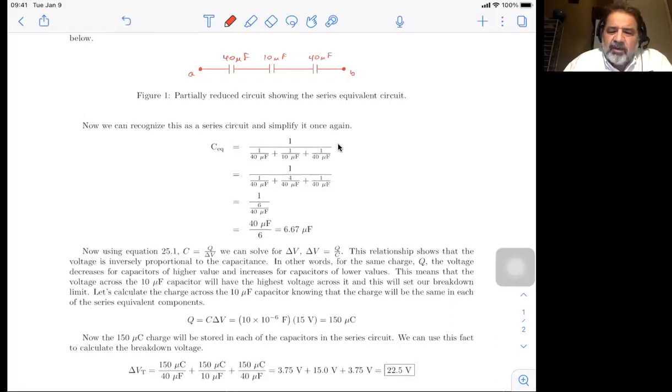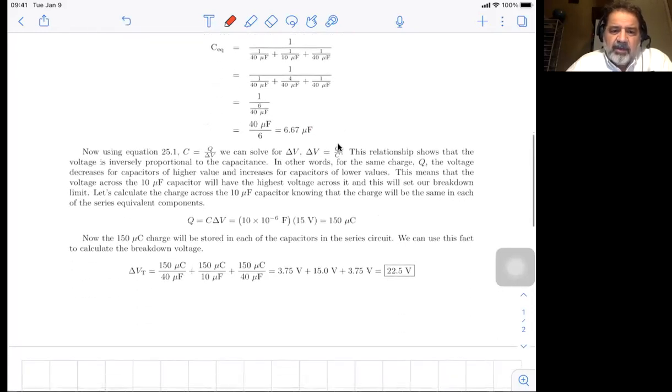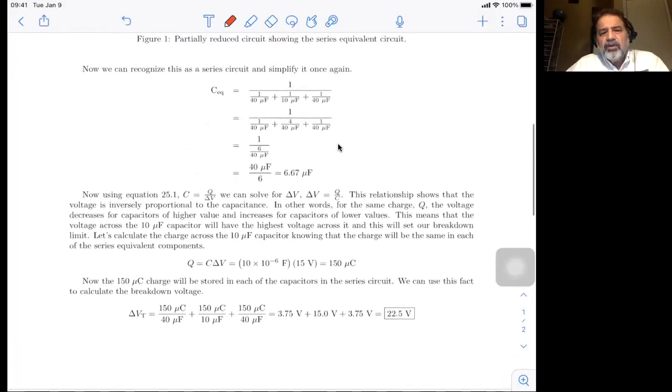Now let's calculate the charge across the 10 microfarad capacitor, knowing that the charge will be the same in each of the series equivalent components. So it's just Q equals C Delta V. So that's 10 times 10 to the minus six farads, 10 microfarads times 15 volts. It's equal to 150 microcoulombs. Now the 150 microcoulomb charge will be stored in each of the capacitors in the series circuit. And we can use this fact to calculate the breakdown voltage.